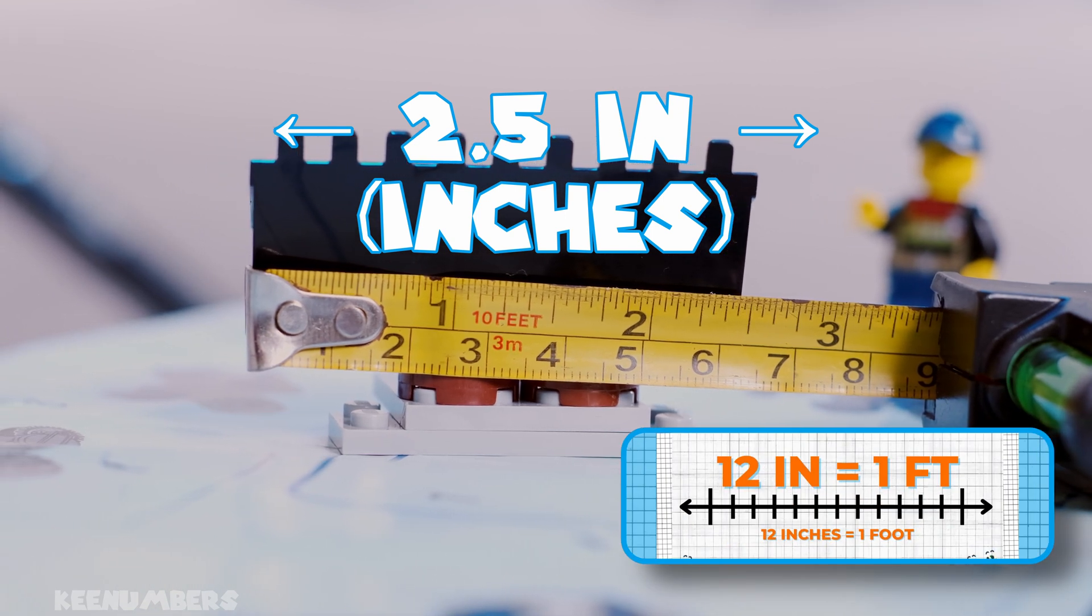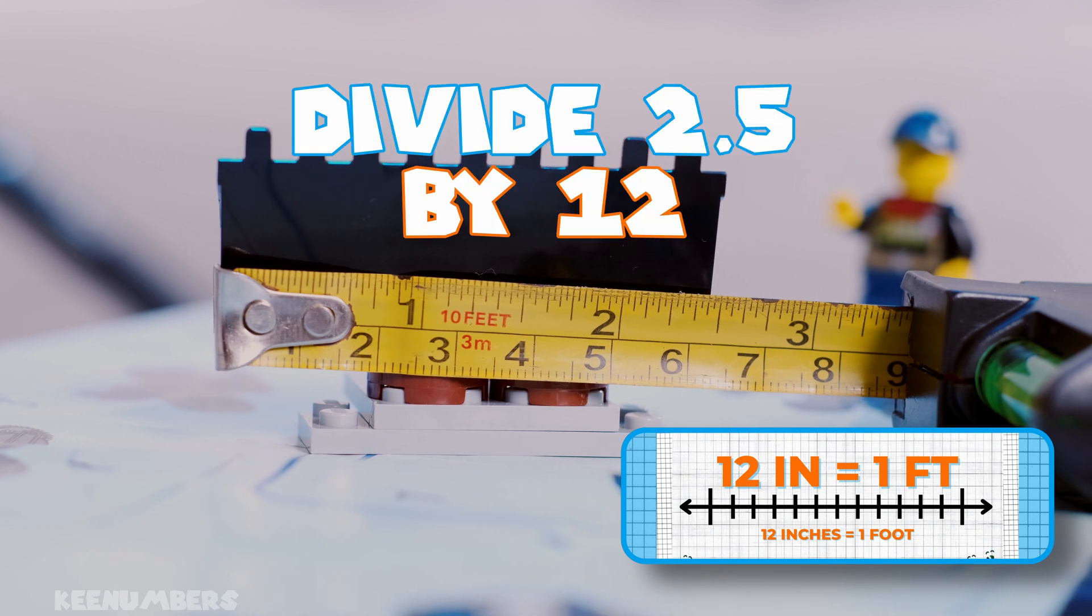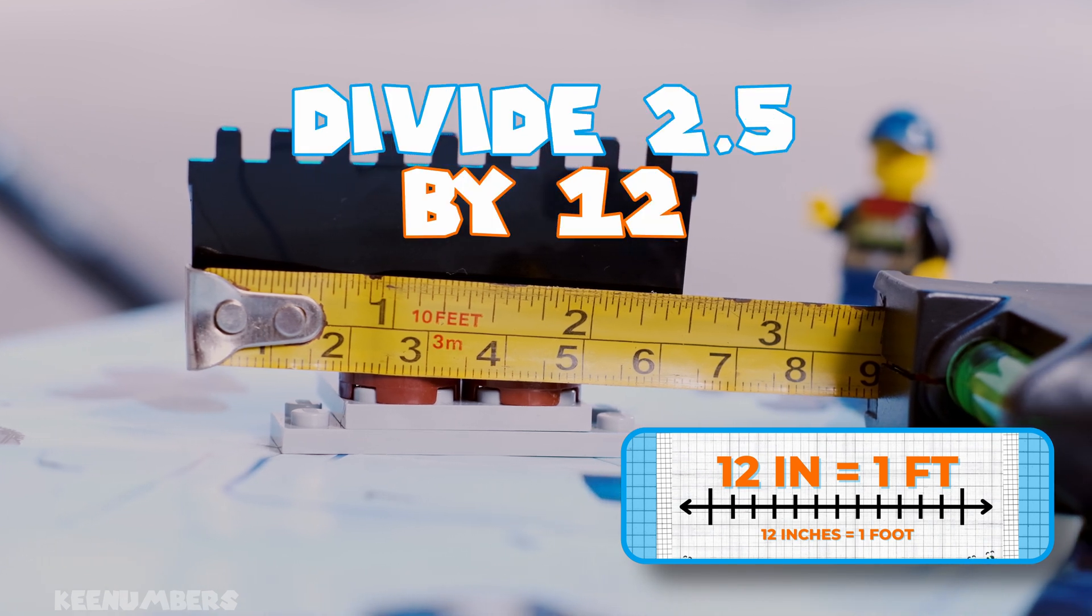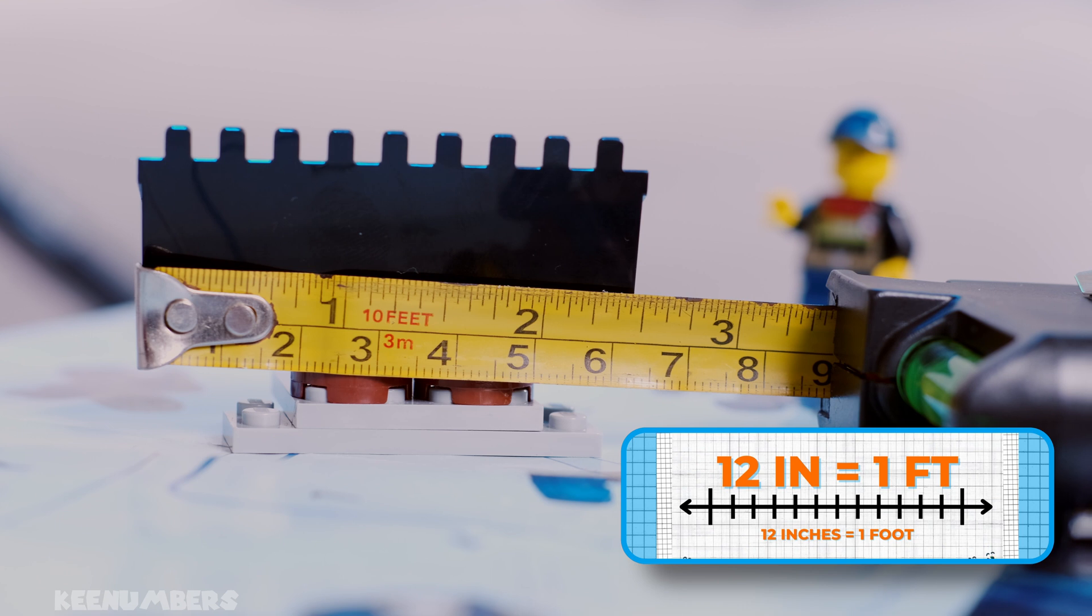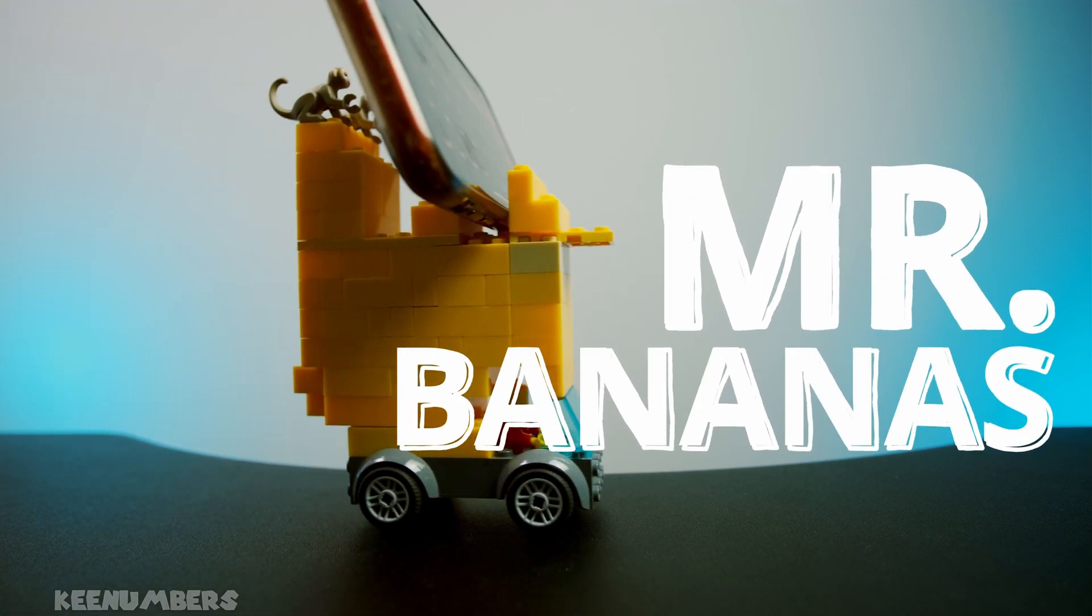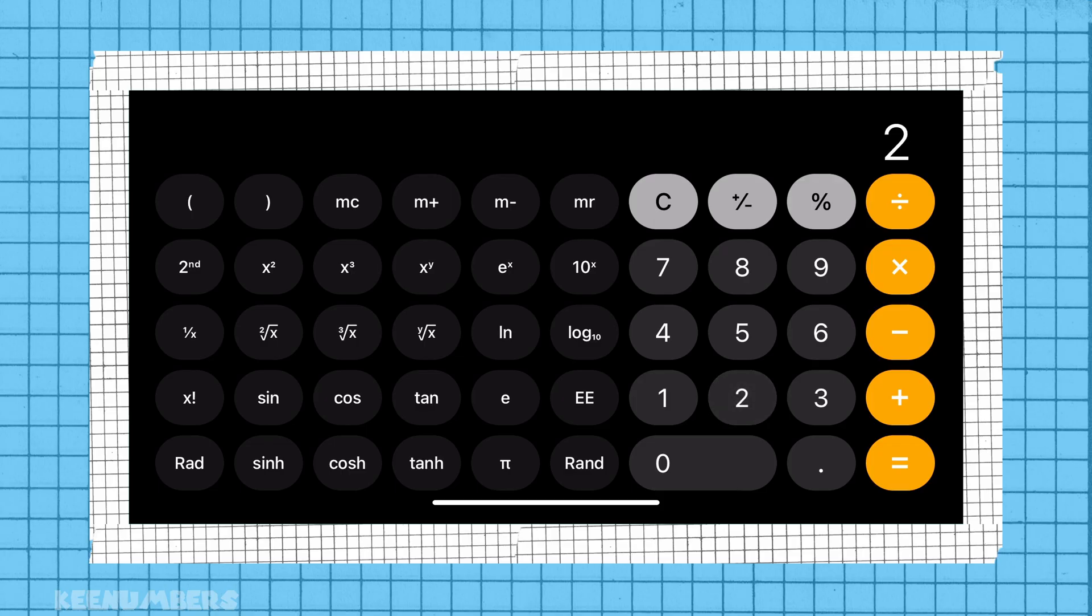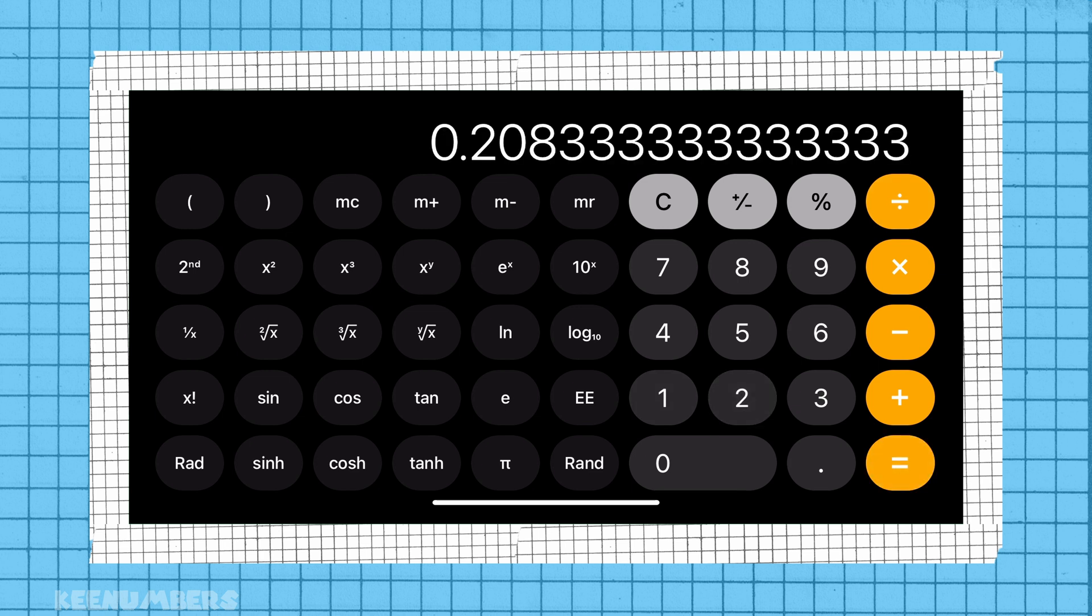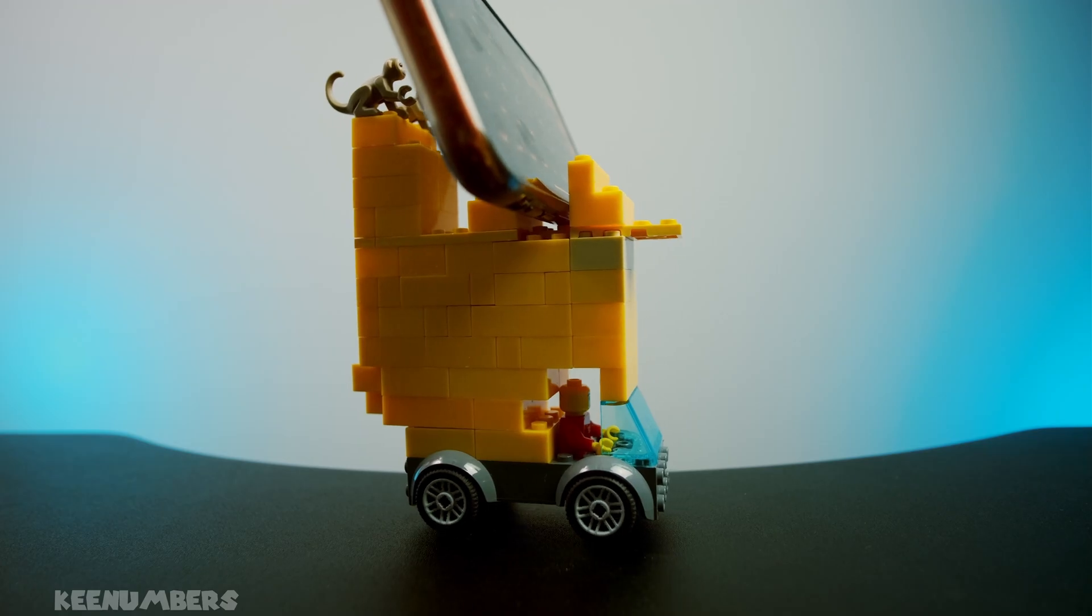Well, there are 12 inches in a foot and you have two and a half, so you're going to use your handy calculator. Oh snap, here comes Mr. Bananas! Wow, he sure is fast with that calculator. Adios, Mr. Bananas.